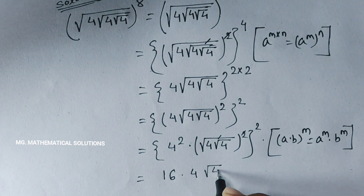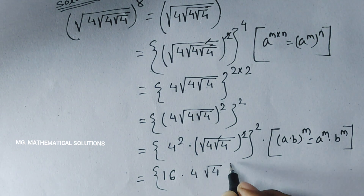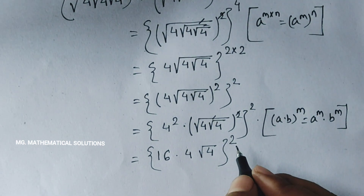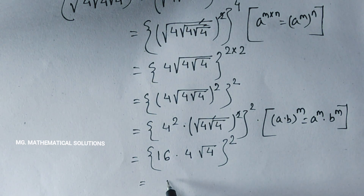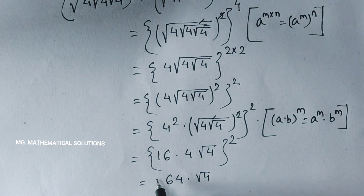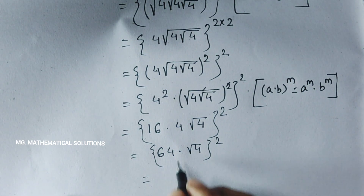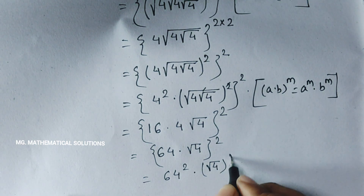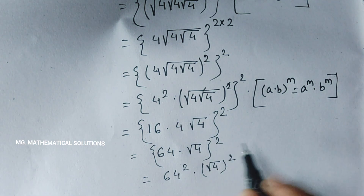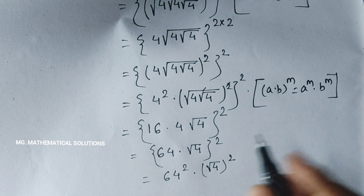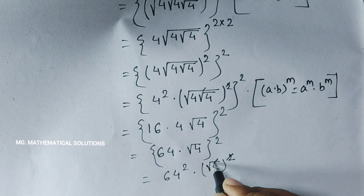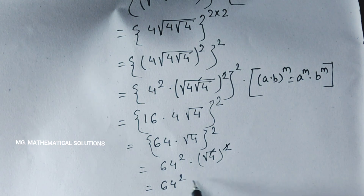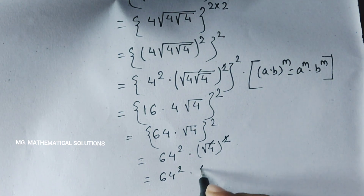So 4 root 4, whole to the power m. Then 16 times 4 means 64, into root 4, whole to the power m, equal to the whole to the power m squared. This means 64 squared into root under 4, whole squared. Now this means 64 squared into root under 4 squared, so 64 squared into 4.